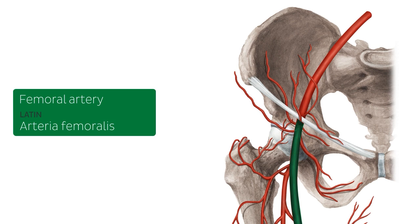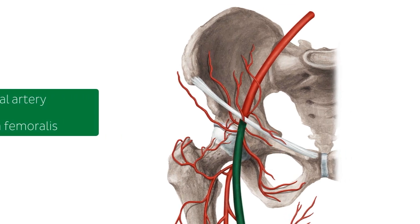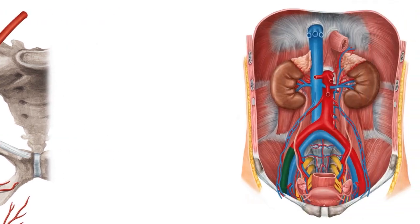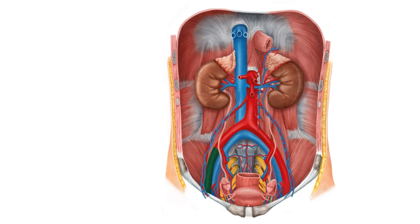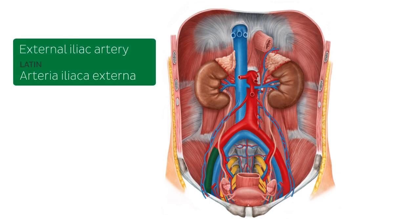In this illustration we can see the femoral artery highlighted in green with the surrounding soft tissues removed. We can also see the transition from the external iliac artery to the femoral artery as it passes underneath the inguinal ligament. The first thing you need to know about the femoral artery is that it is a continuation of the external iliac artery.